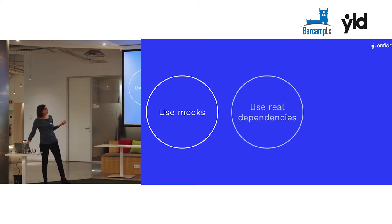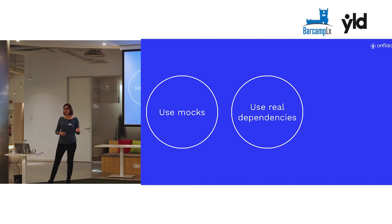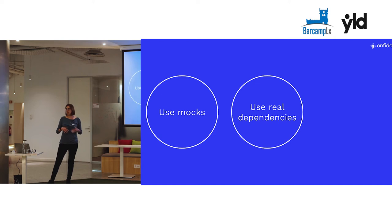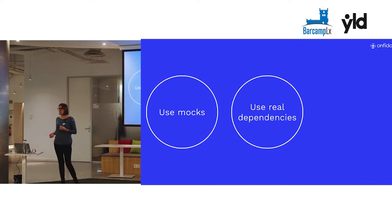That leads us to option number two, in which you use your real dependencies, which brings more confidence to your tests. However, they will be slower. The environment may not be easy to configure so the dependencies all work together. And the tests may not be deterministic anymore, which kind of sucks if you have a pipeline that runs multiple times a day.